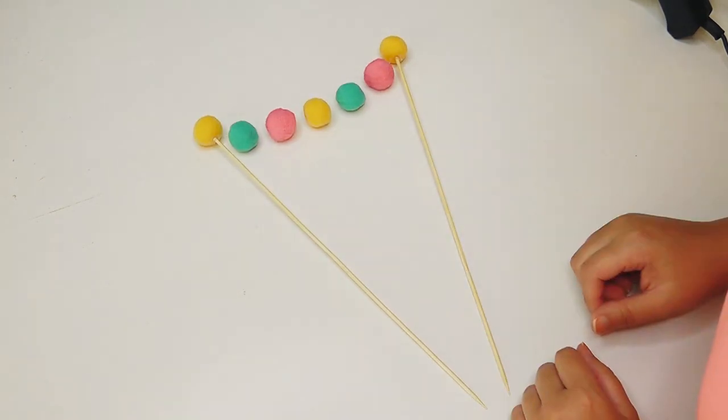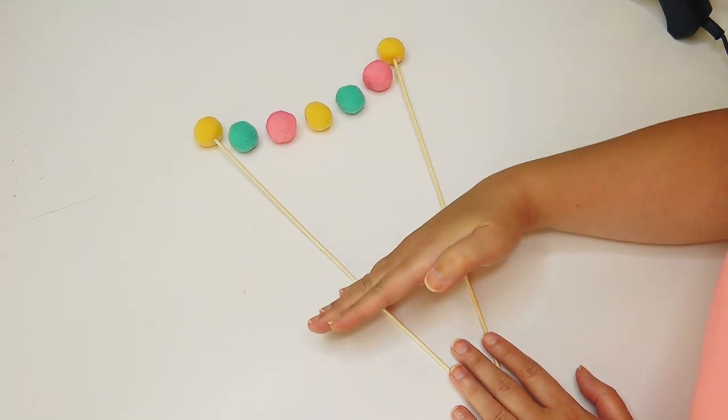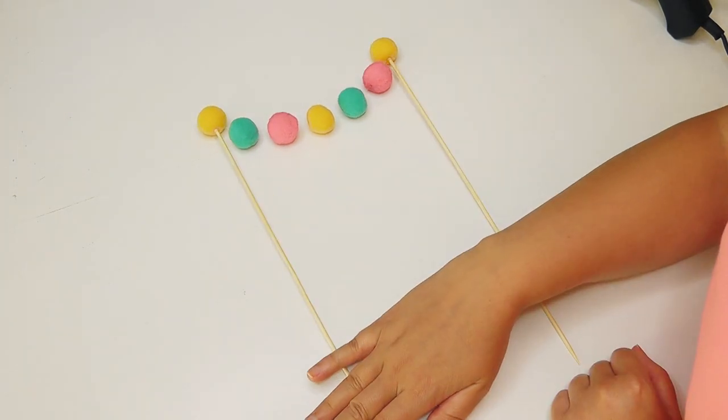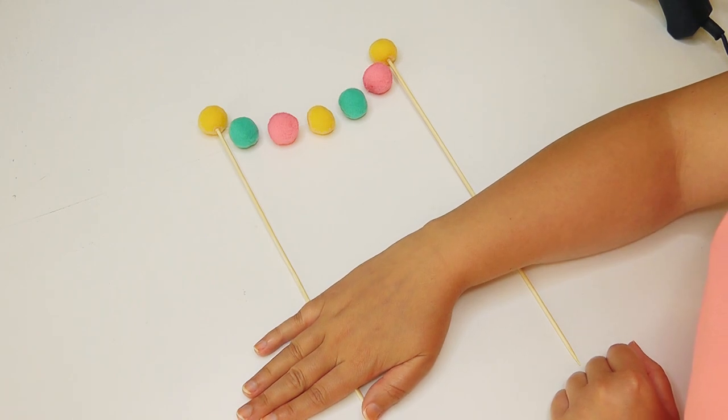This will fit on a smaller cake by placing the sticks in diagonally, or it will fit on a wider cake by placing the sticks in straight.